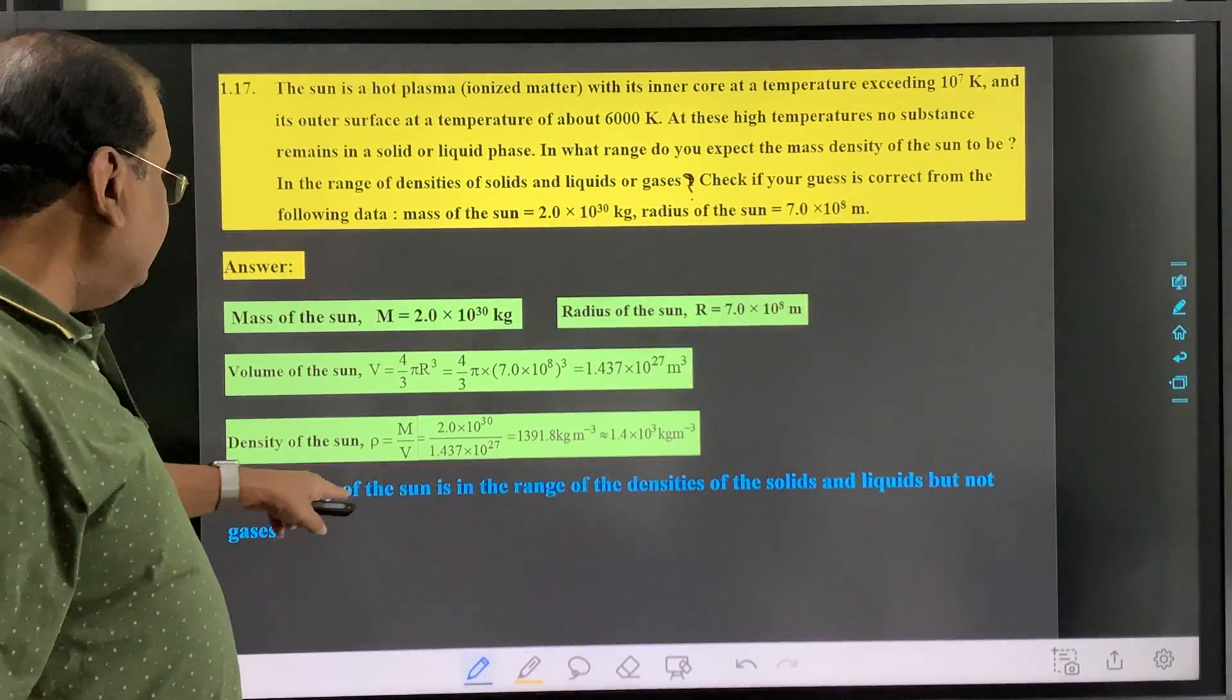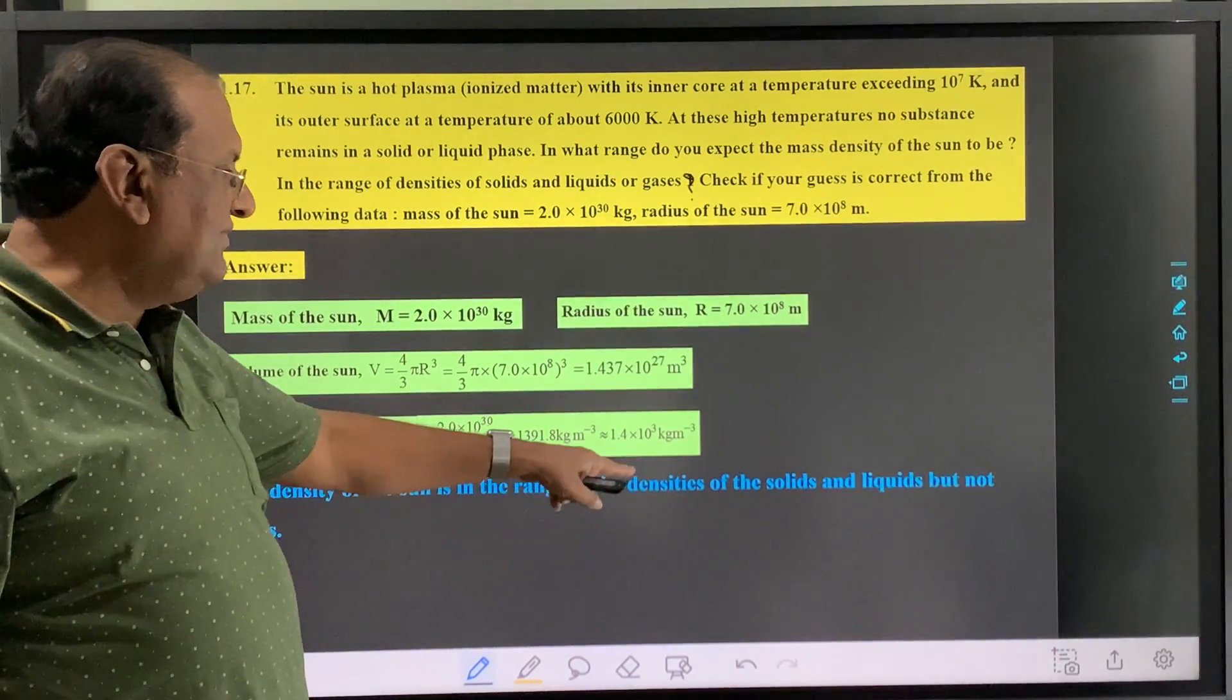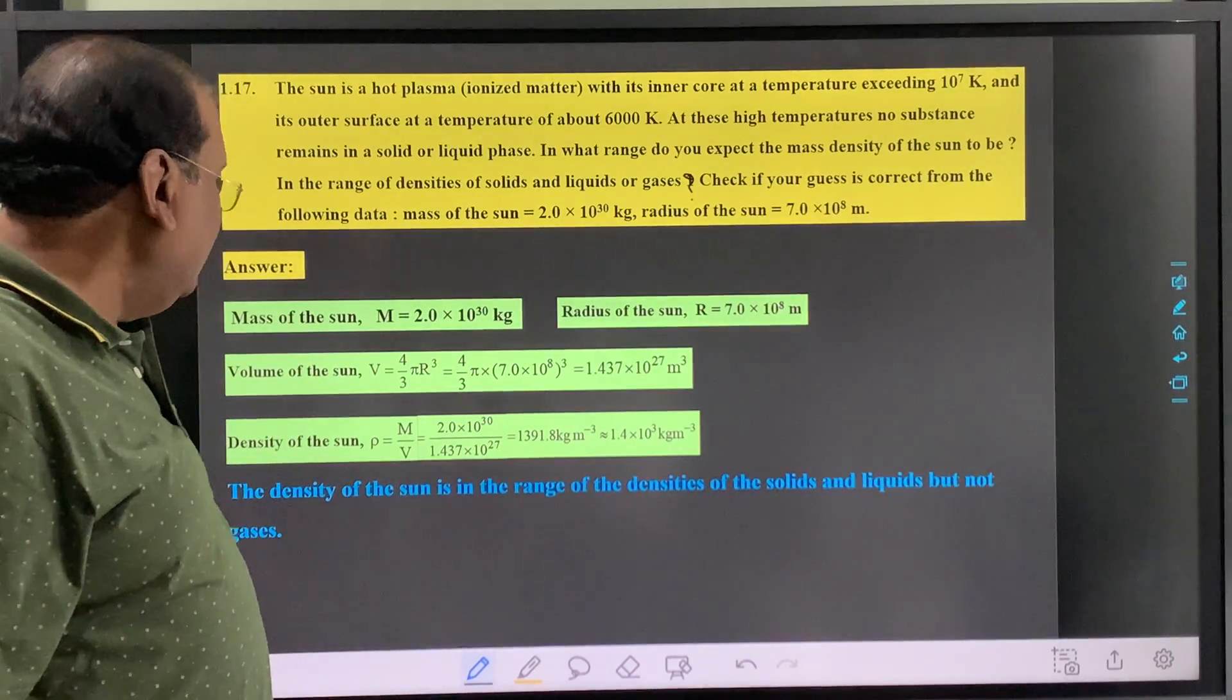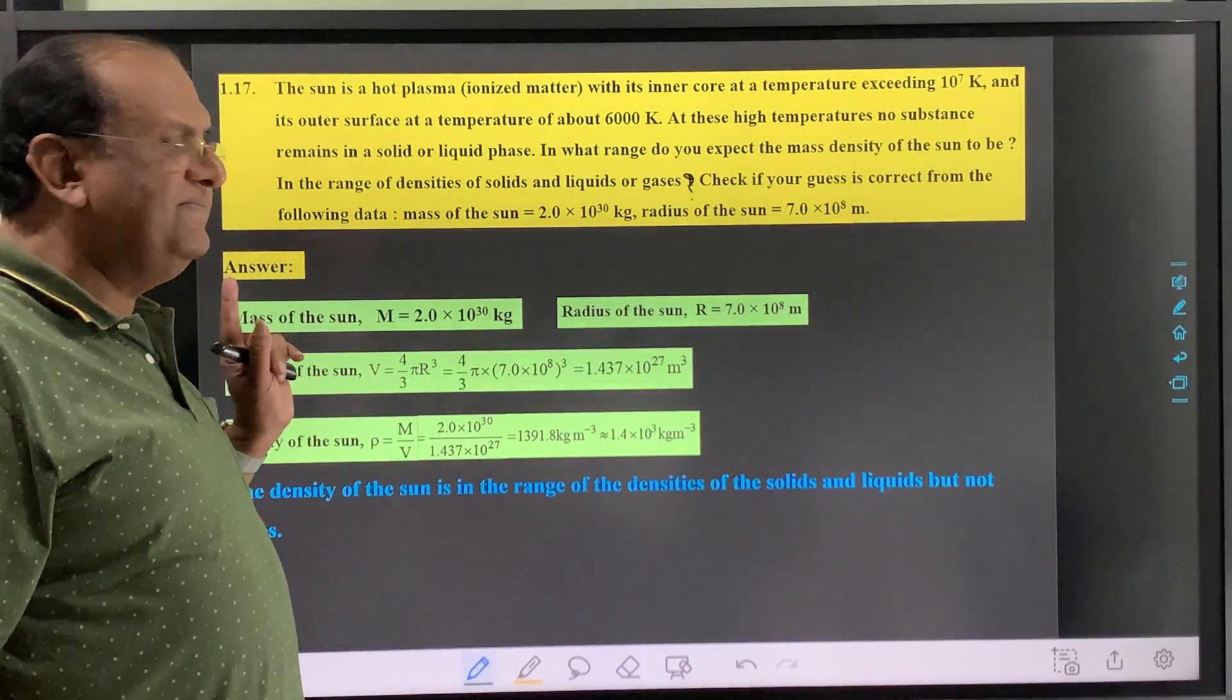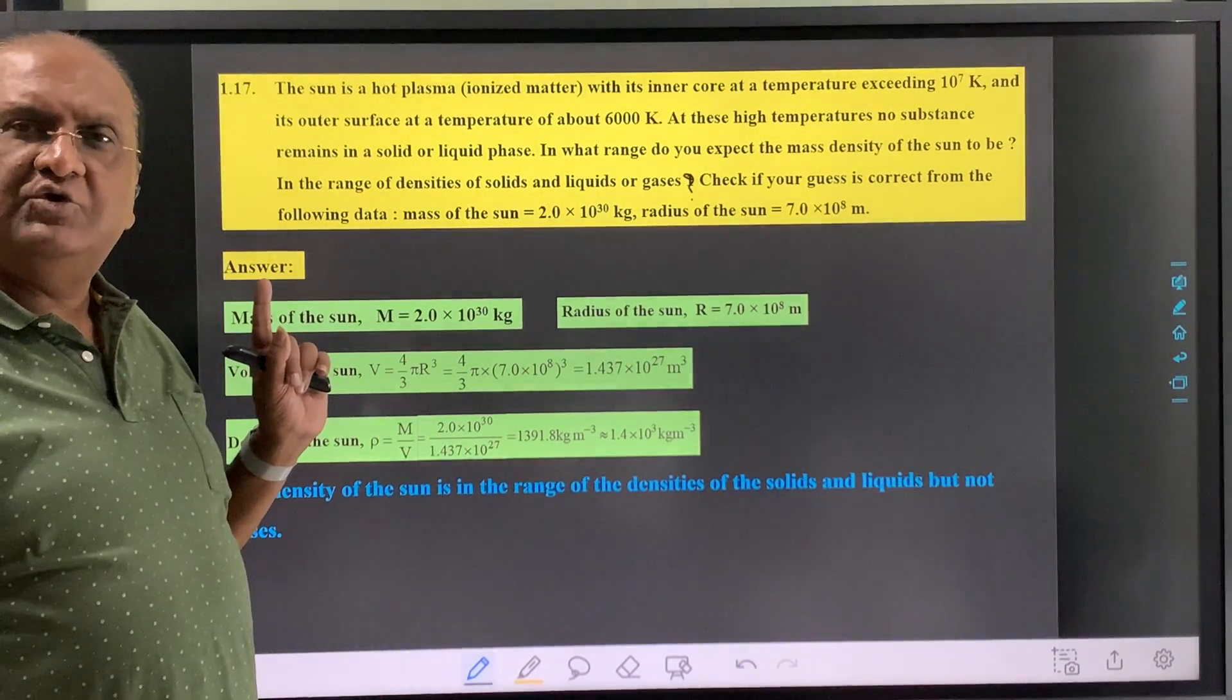The density of the sun is in the range of densities of solids and liquids, but not in the range of gases.